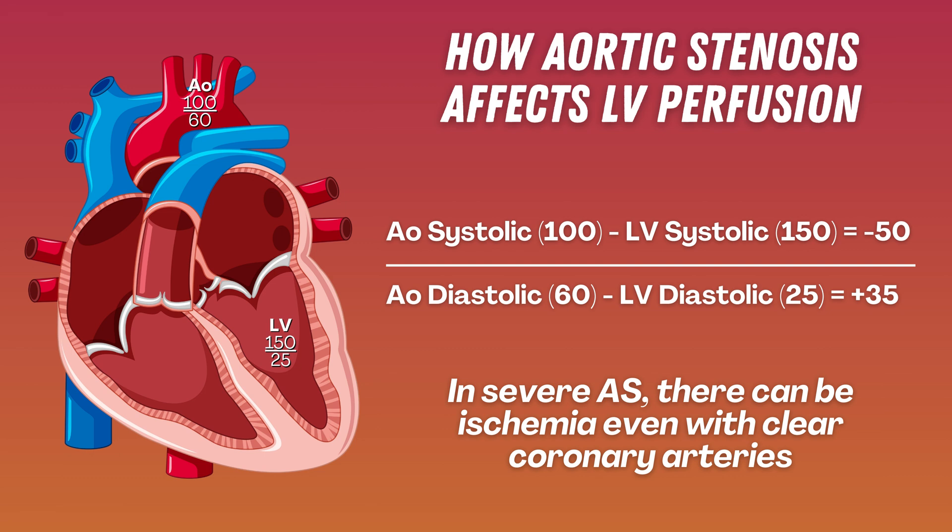To make matters worse, if the aortic stenosis is long-standing, the LV will start to hypertrophy to try to overcome the increased resistance. A bigger heart muscle requires more blood flow, which can't happen due to the dysregulated pressure gradients, and you have a vicious cycle leading to heart failure.